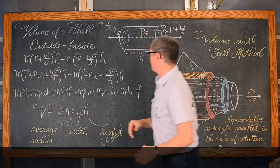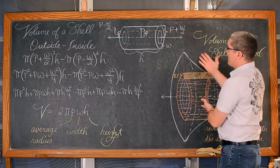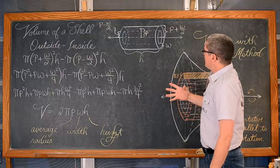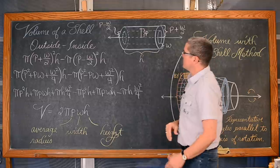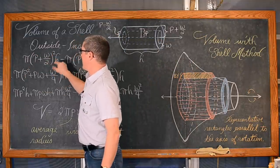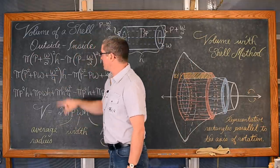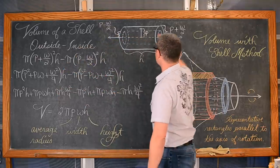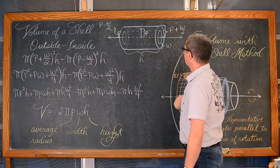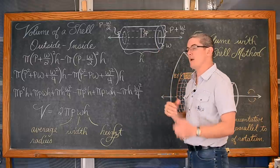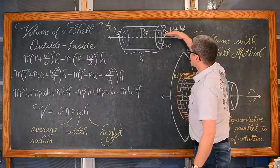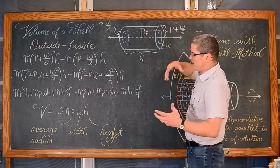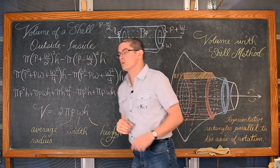Now we are going to have the volume of a shell. Finding the volume of a cylinder is π times the radius squared times the height. But we are going to have that outside cylinder and then subtract the volume of the inside cylinder, giving us this shell. We have the height, which is the distance between the two parallel bases of our cylinder. We have an axis of rotation, and ultimately what we are going to be working with is this value of p, which in your textbook is labeled as an average radius — the distance to the middle of the shell.